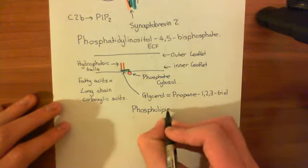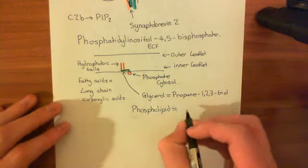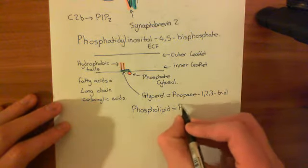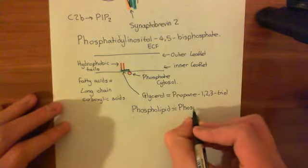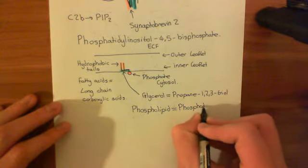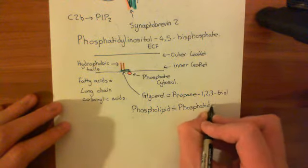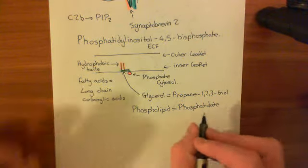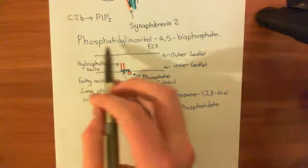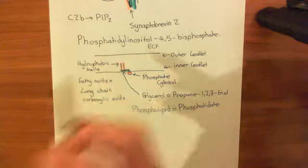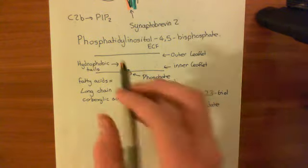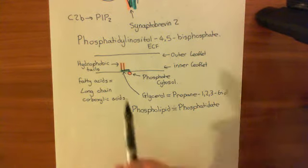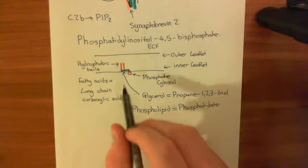The old biochemist's name for a phospholipid is a phosphatidate molecule. Why am I telling you these old names? Phosphatidate is helpful because it's going to help us understand the term 'phosphatidyl' in PIP2's name. Basically, PIP2 is just a modified phospholipid — it's just a normal phospholipid with an extra bit stuck onto the head.